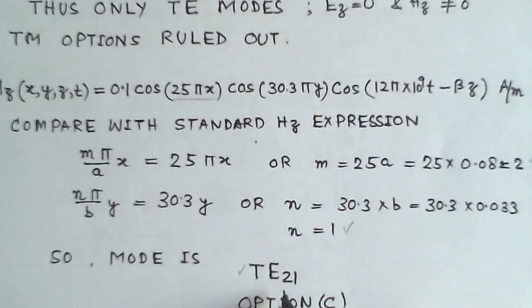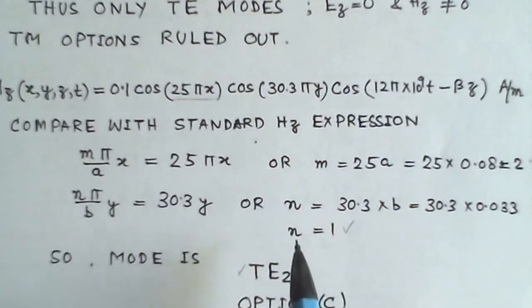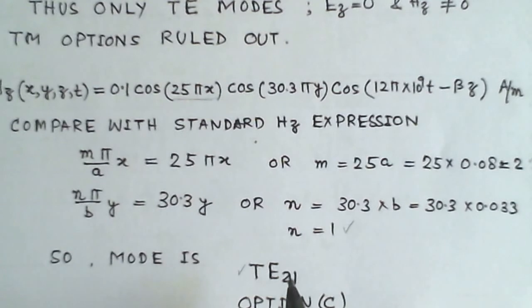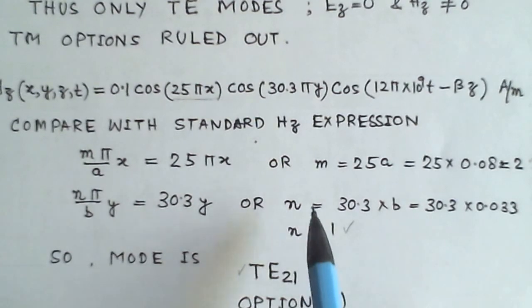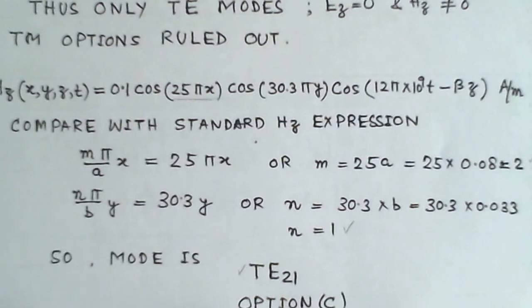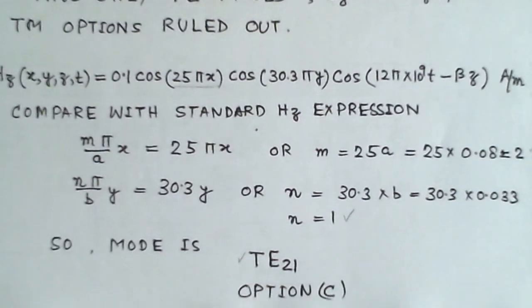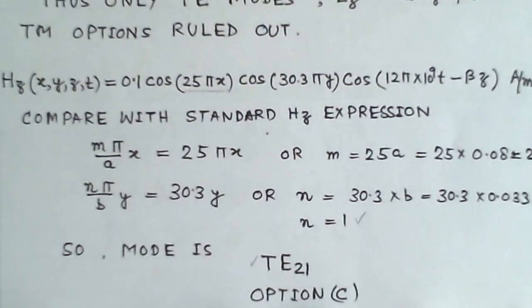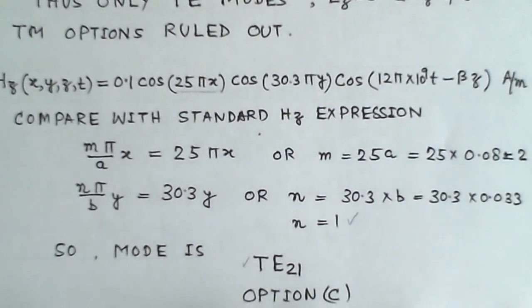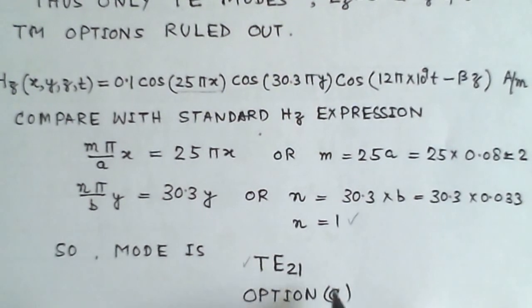Since m = 2 and n = 1, and this is a TE mode, the mode is TE21, where m and n indicate the half-wave variation of the field along the wide and narrow dimensions of the waveguide. The correct answer is option C, corresponding to mode TE21.